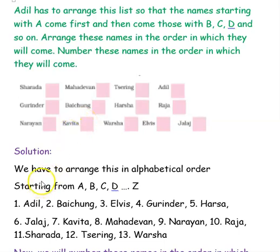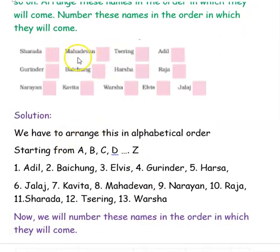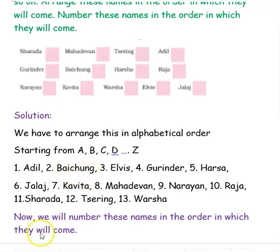So the solution: we have to arrange them in alphabetical order starting from A, B, C, D, and so on up to Z. We start with A — the first name is Ajil. Then B — that is Baichu. C and D are not there, so we go with E — the third one is Elvis.